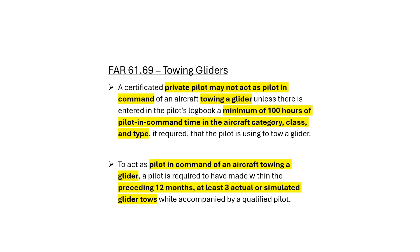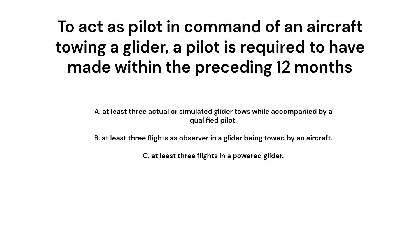FAR 61.69 covers the towing of gliders. A certificated private pilot may not act as pilot in command of an aircraft towing a glider unless they have in their logbook a minimum of 100 hours of pilot in command time in the aircraft category, class, and type, and have made at least three actual or simulated glider tows within the preceding 12 months. The correct answer is A — the pilot must have made at least three actual or simulated glider tows while accompanied by a qualified pilot.